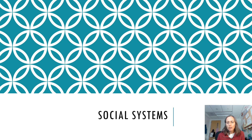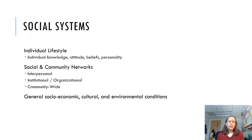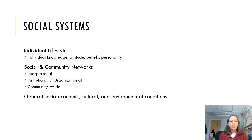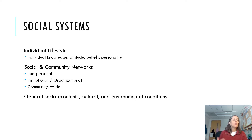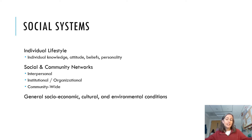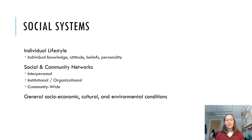Let's talk about social systems and what we mean by that. There are three different levels — think of them almost as concentric circles. At the individual level, you have the choices you make as an individual, which are based on your knowledge, attitudes, and beliefs. These are things you partly get from how you were raised, the things to which you were exposed, your culture, your religion, your family of origin, your neighbors — all those things.